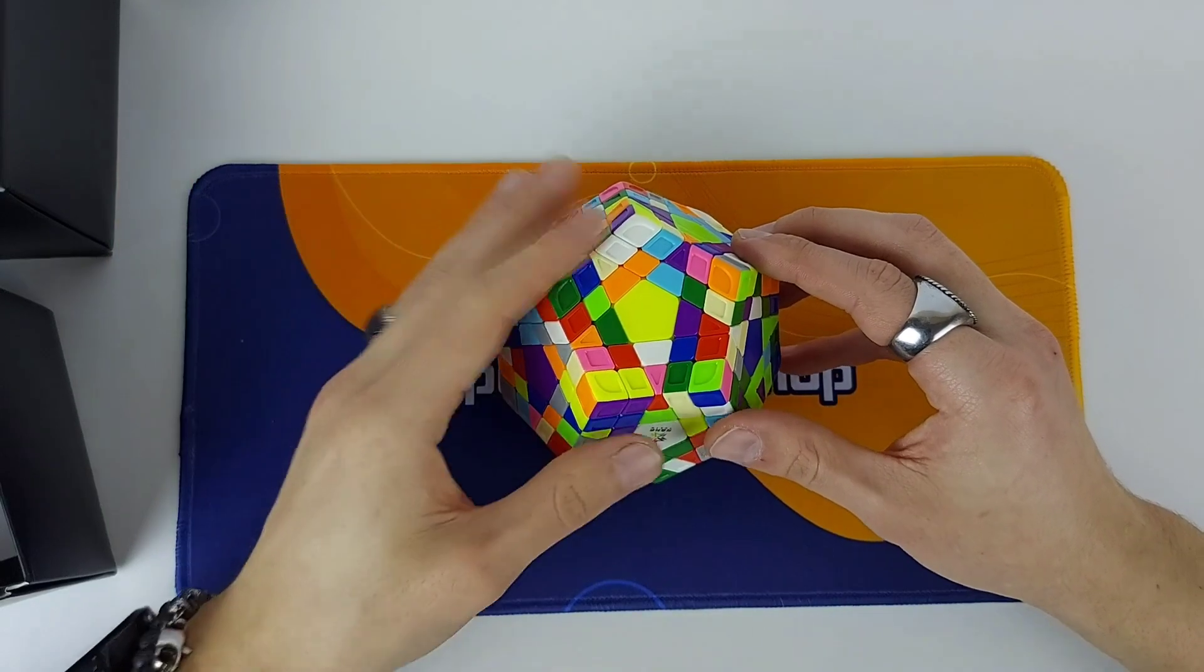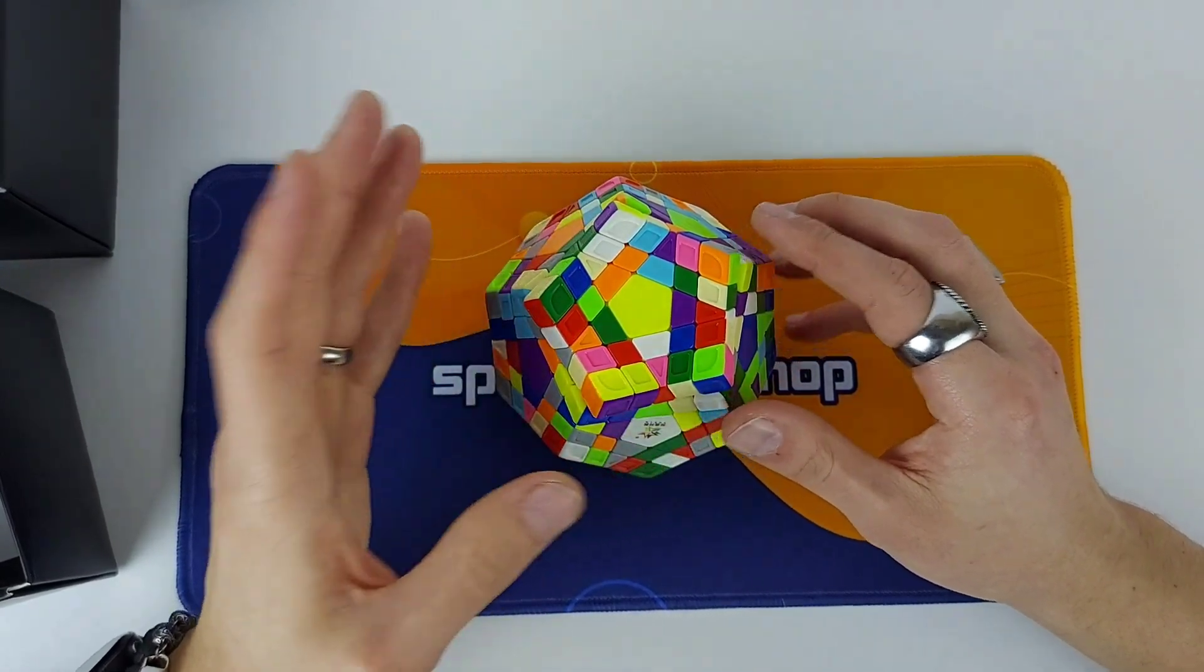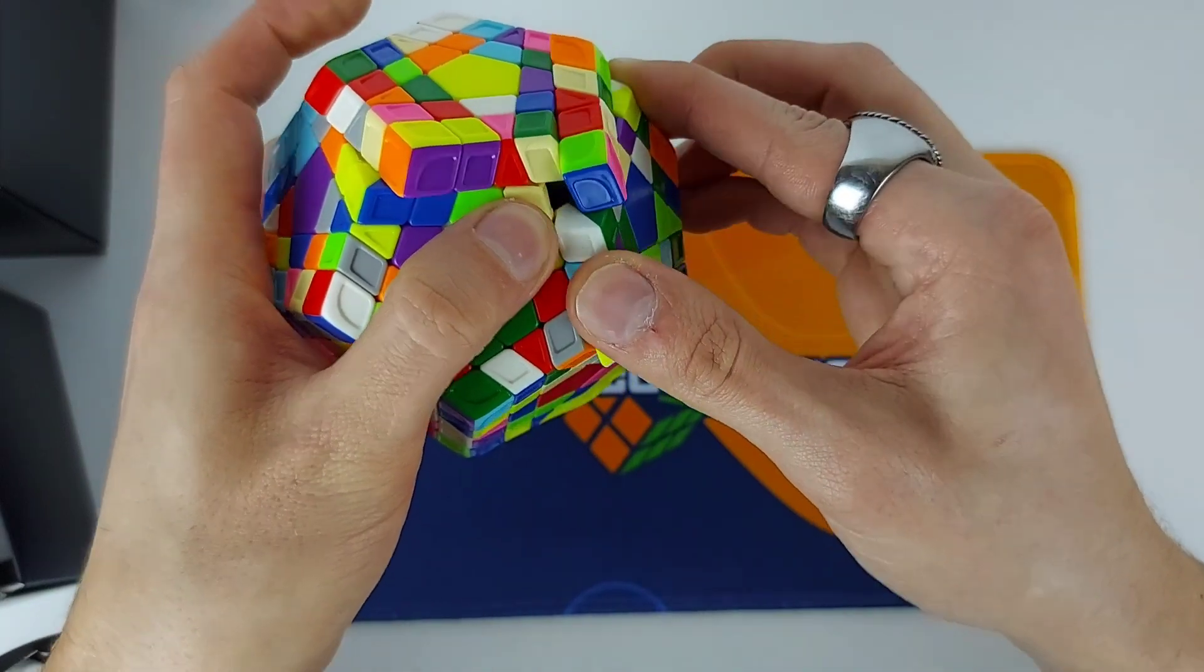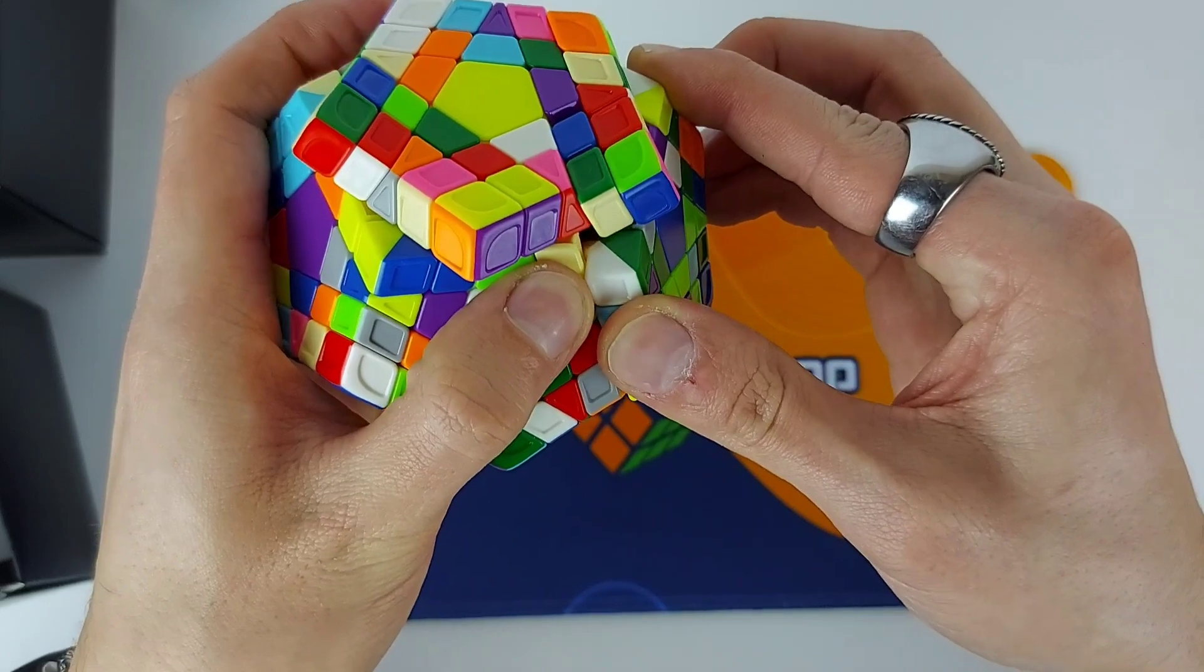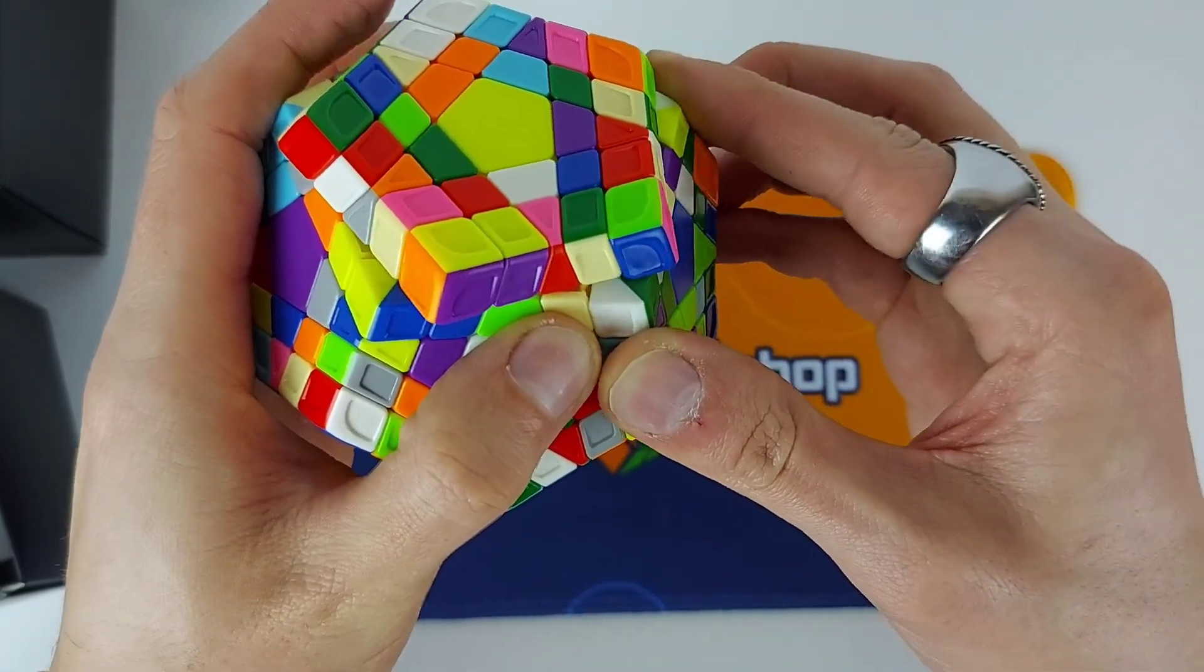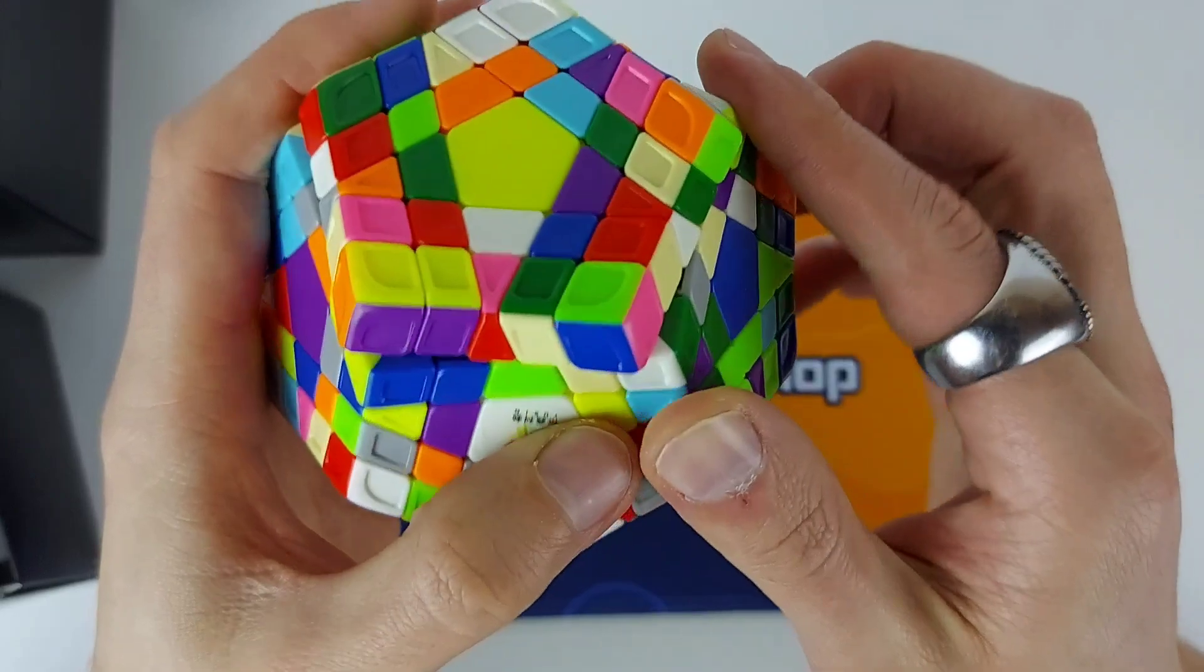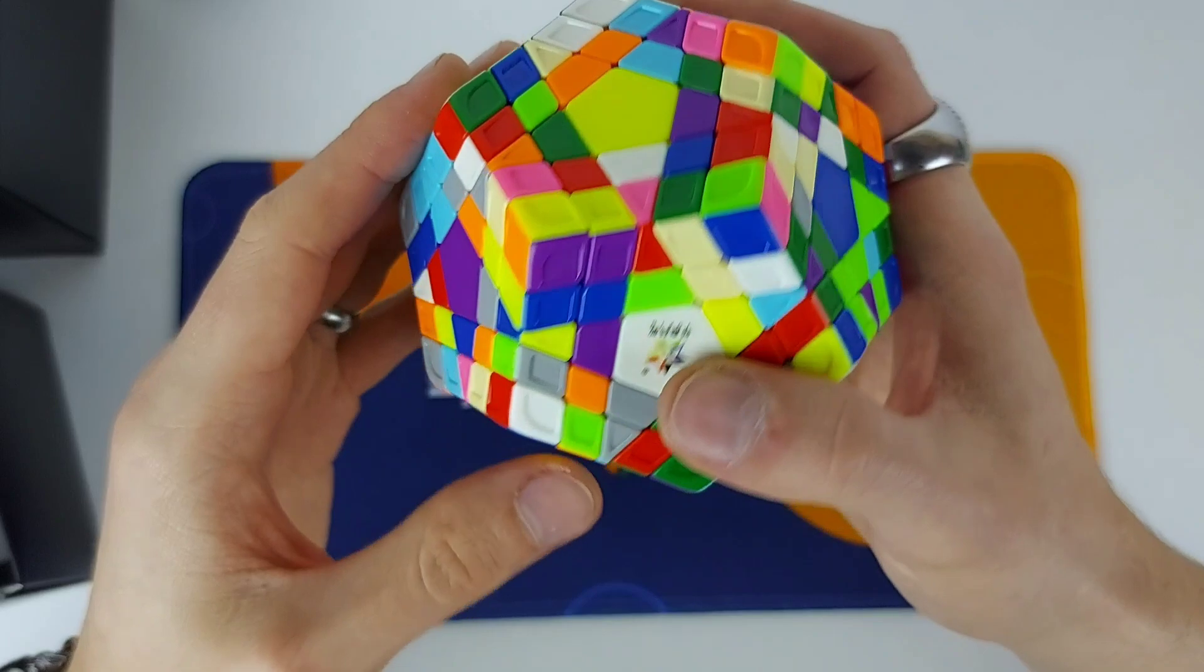I don't know if that's a thing with bigger megaminxes but let's check it out. Ah, that's quite a lot. Please don't pop, please don't pop, please don't pop. I'm not going to risk it. But it does a piece so that's quite good. And like reverse, I'm guessing not at all. But hey, it's a big cube. What do you expect?